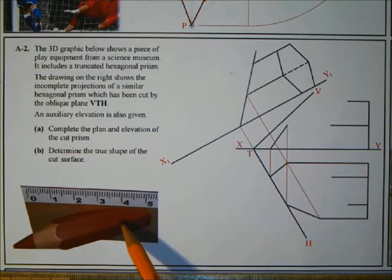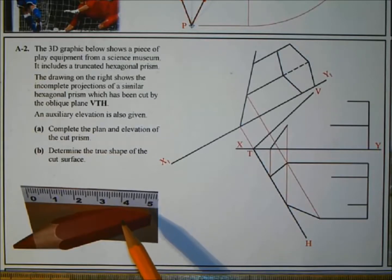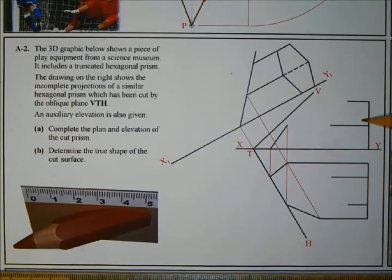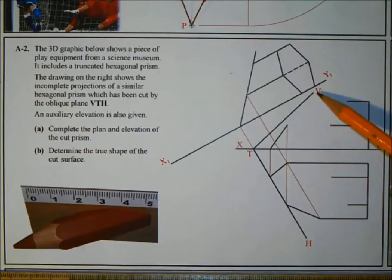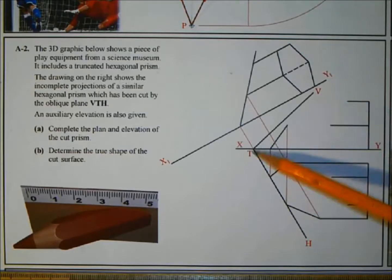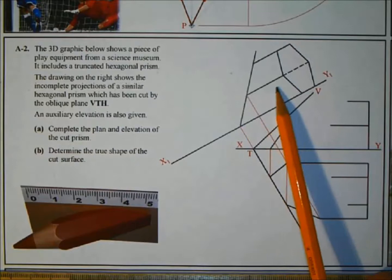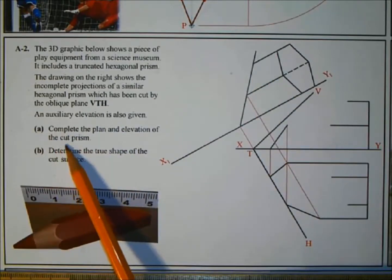The drawing on the right shows the incomplete projections of a similar hexagonal prism being cut by the oblique plane VTH. We have our elevation and plan of that hexagon-based prism, with the hexagon visible in the auxiliary view. That oblique plane is cutting through the prism, and an auxiliary elevation is also given showing the cut.